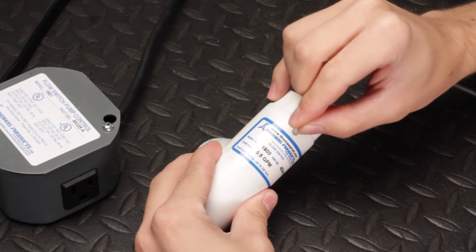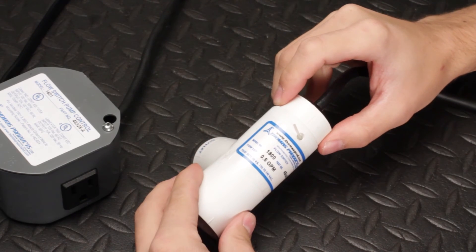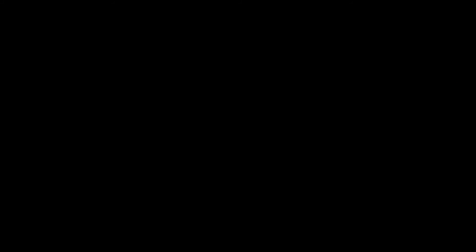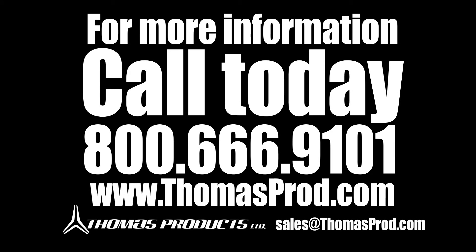That's all there is to it. If you need further assistance, please contact our support team at 800-666-9101 or email us at sales@thomasprod.com. For information on this and other products, check out our website at www.thomasprod.com.